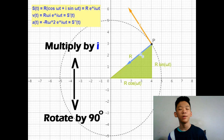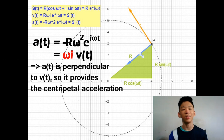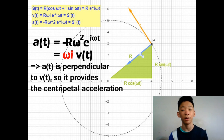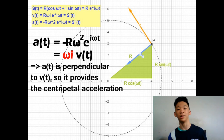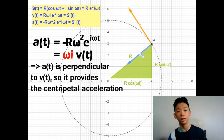Notice that multiplying any complex number by i rotates it on the complex plane by pi over 2 radians, or 90 degrees. We can see that the acceleration is omega i times the velocity, which means the acceleration is perpendicular to the velocity. Since the velocity here is the tangential velocity of the particle, this acceleration is the centripetal acceleration.